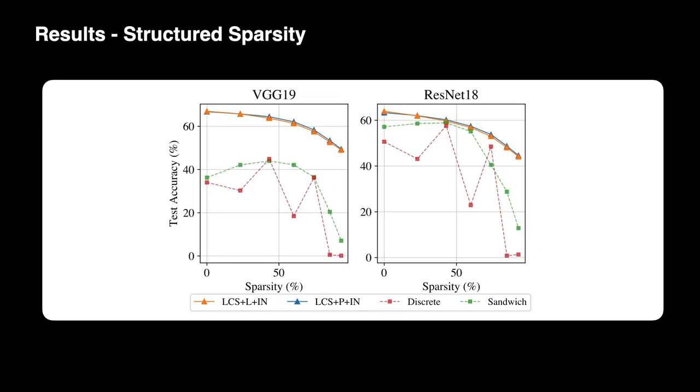Here we show results when the compression method is structured sparsity. Our baselines are trained by pruning a random number of channels at each iteration. At inference, we do not recalibrate our baseline's batch norm statistics for different compression rates. We encourage viewers to read our paper for more details.